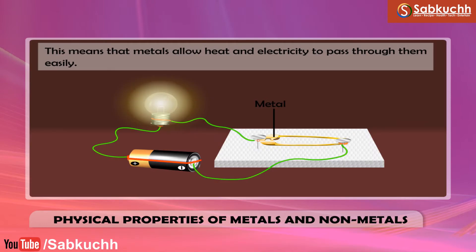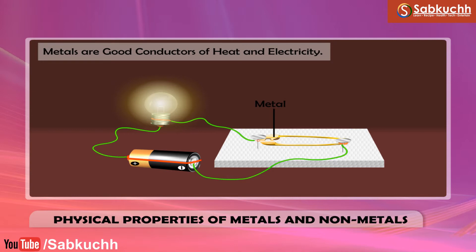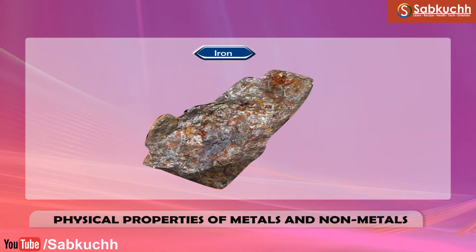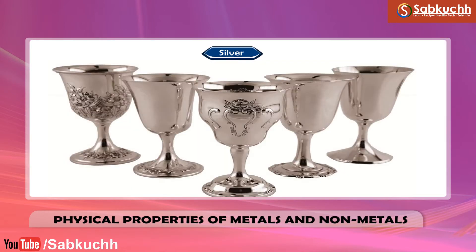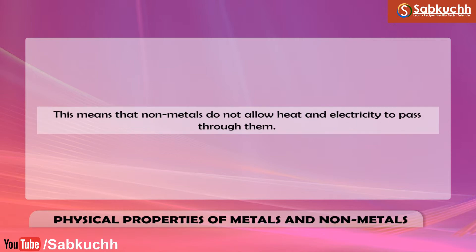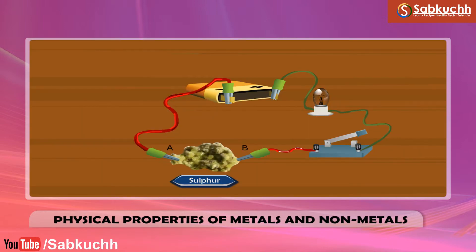Conductivity. Metals allow heat and electricity to pass through them easily; metals are good conductors of heat and electricity. Copper, silver, gold and iron metals are good conductors of heat. Silver metal is the best conductor of heat. Non-metals are poor conductors of heat and electricity, which means that non-metals do not allow heat and electricity to pass through them. For example, sulfur is a non-metal which does not conduct heat or electricity.